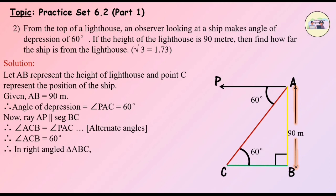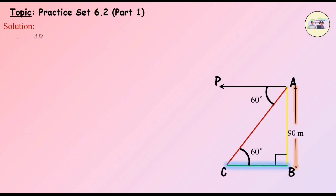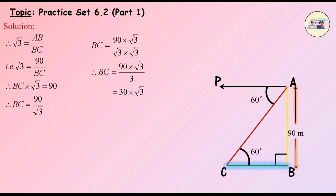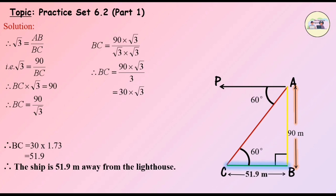We know that tan θ equals opposite side upon adjacent side. Therefore, in right angle triangle ABC, tan 60° = AB upon BC. But the value of tan 60° equals root 3. Therefore, root 3 equals AB upon BC, that is, root 3 equals 90 upon BC. Therefore, BC × root 3 = 90. By rationalizing the denominator, we get BC = 90 × root 3 upon (root 3 × root 3), which equals 90 × root 3 upon 3, which equals 30 × root 3. But the value of root 3 is given as 1.73. Therefore, BC = 30 × 1.73. Therefore, BC equals 51.9. So the ship is 51.9 meters away from the lighthouse.